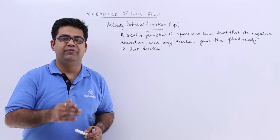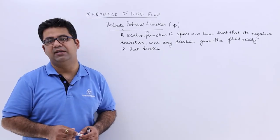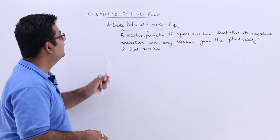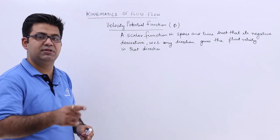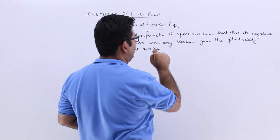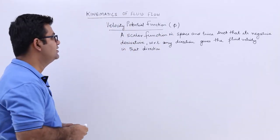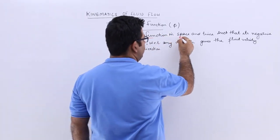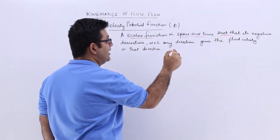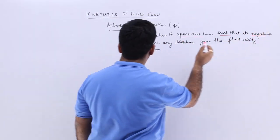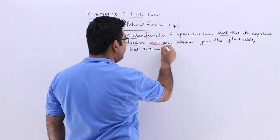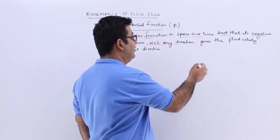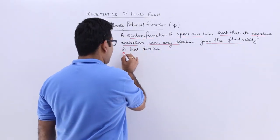After the concept of velocity and acceleration of fluid flow, let's look at the next concept: the velocity potential function, denoted by the symbol phi. This function is a scalar function of space and time, such that its negative derivative with respect to any given direction — x, y, or z — will give the fluid velocity in that direction.